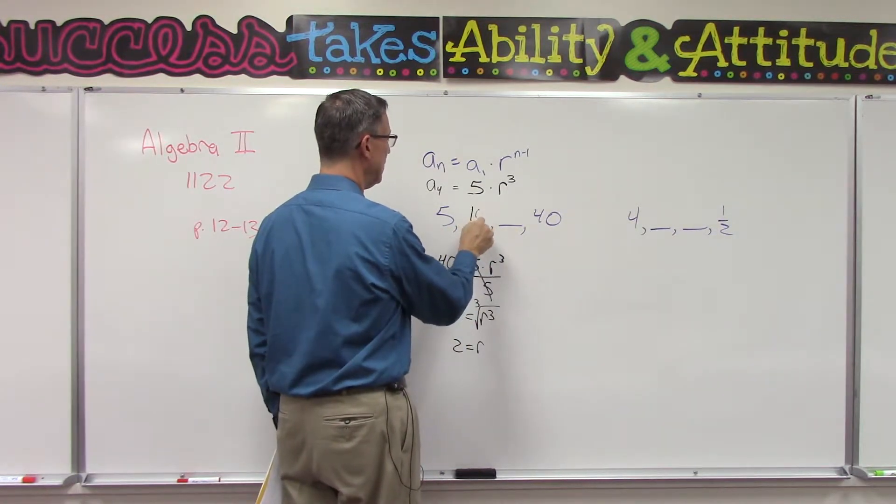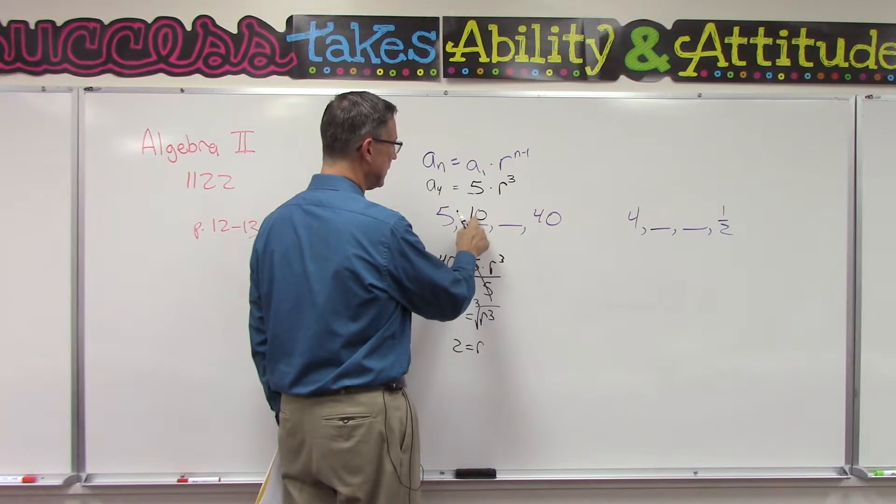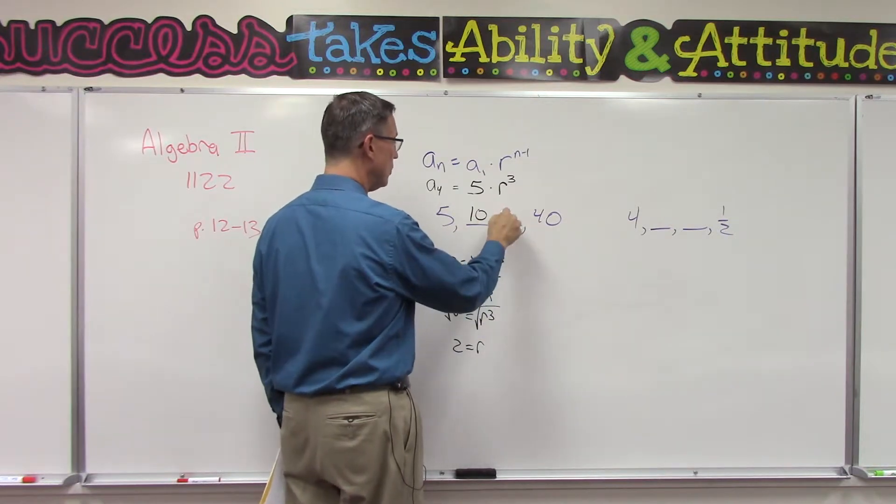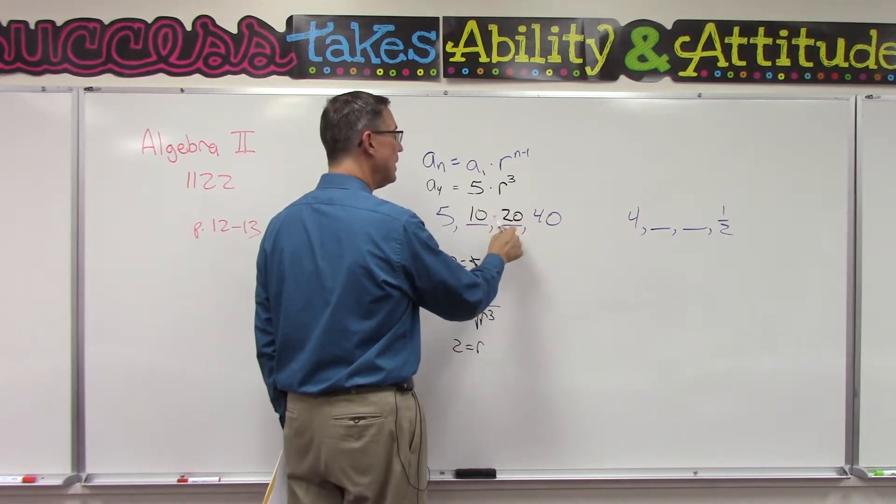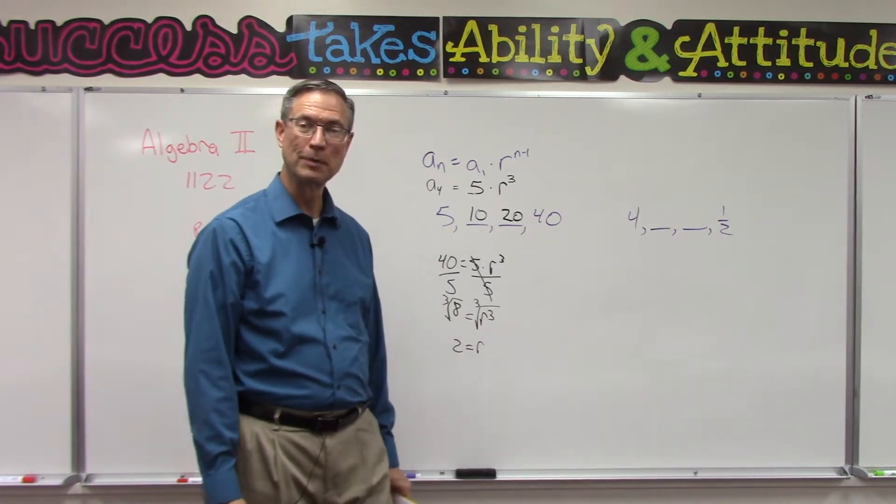Now we know what to do to find these other numbers. We take the 2 times the first number, which gives us 10. Now we're going to take the second number, 10 times 2, and we get 20. And then the 20 times the 2 equals 40.